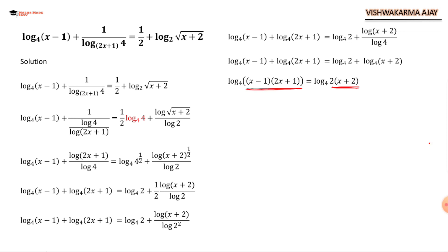Log on both sides will cancel each other, or you can take antilog with base 4. Now this is very simple; I think most of you can continue from here. We are going to multiply the brackets, simplify the equation to make it in quadratic form. We have quadratic equation 2x² - 3x - 5 = 0.